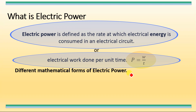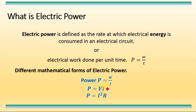There are different mathematical forms of electric power. The first one is P = W/T. The second form is P = VI, where V is the voltage and I is the current. The third form is P = I²R, where I is the current and R is the resistance. We will derive these three equations and define the unit of electric power.